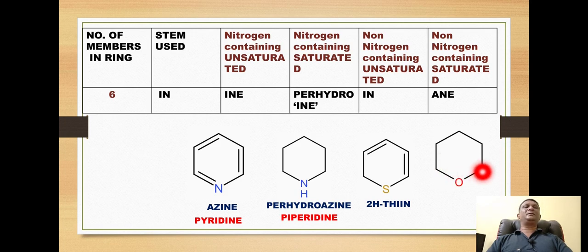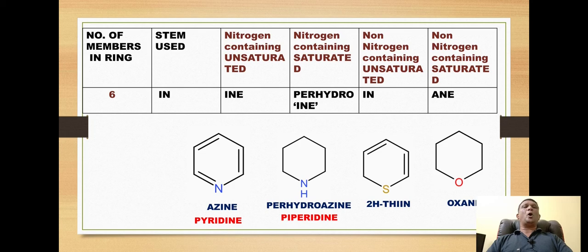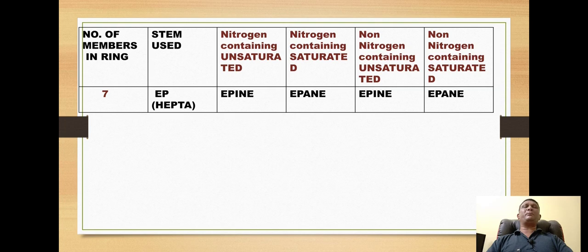For a non-nitrogen six-membered ring that is completely saturated, we use the suffix 'ane'. For example, an oxygen-containing saturated six-membered ring is called 'oxane', which is also known as tetrahydropyran.